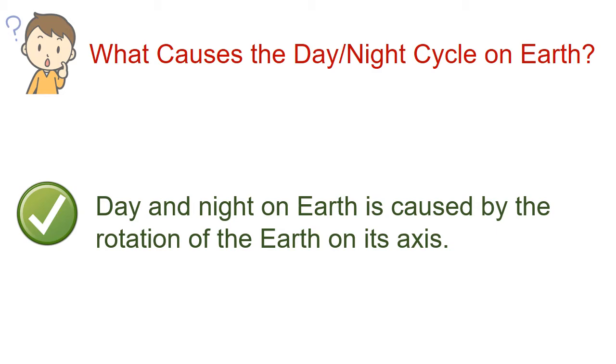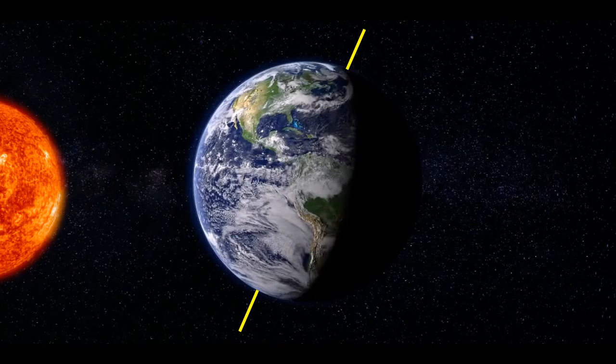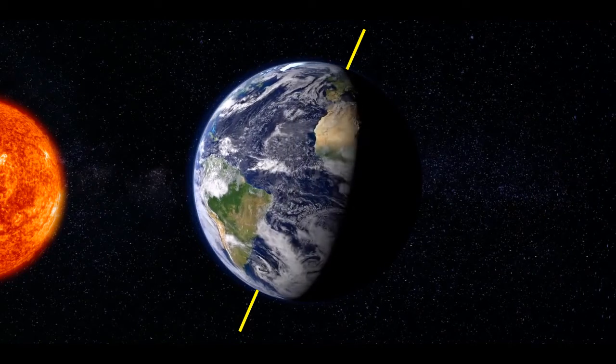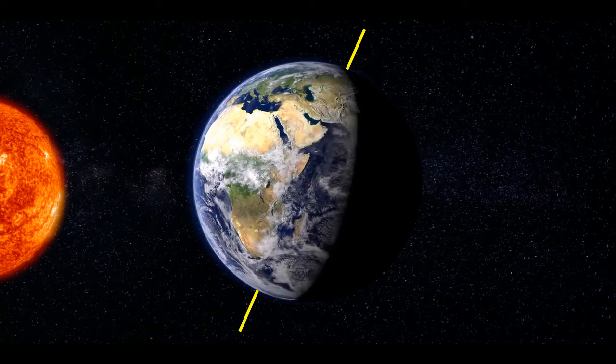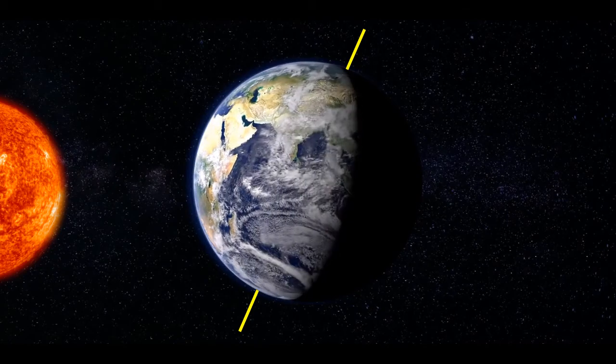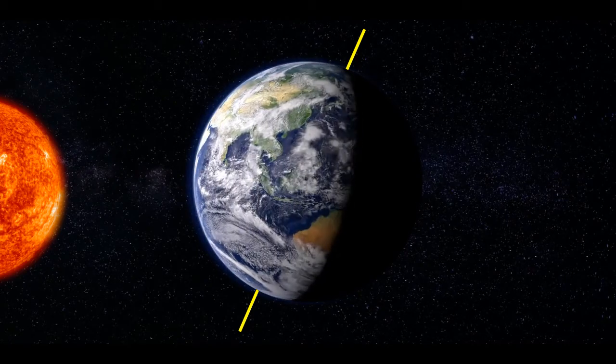Now let's understand in a very simple and easy way. As we know, the Earth is a sphere and spins round and round on its axis, so that sunlight falls only on one side of the Earth.